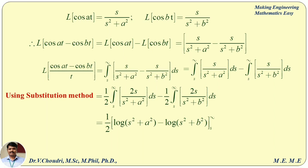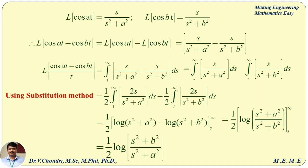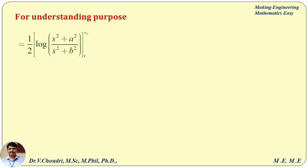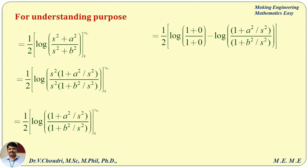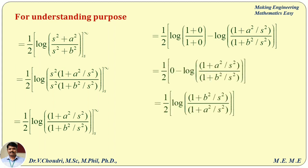Applying the log m − log n = log(m/n) formula: (1/2) log[(s² + a²)/(s² + b²)] with limits s to infinity. Taking s² common from numerator and denominator at the upper limit infinity and cancelling, log(1) = 0. Applying limits, the result is (1/2) log[(s² + b²)/(s² + a²)].